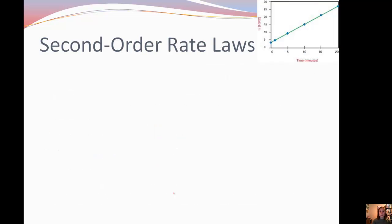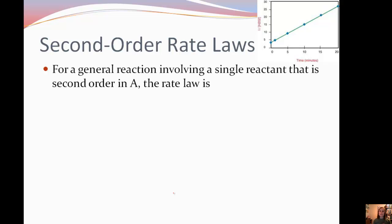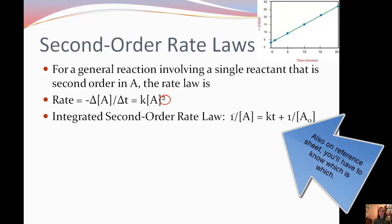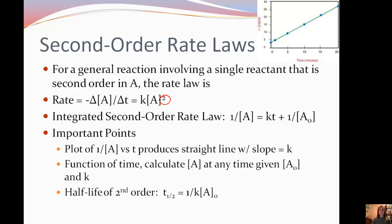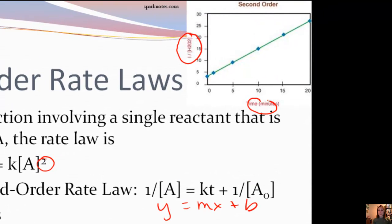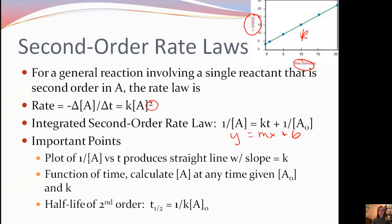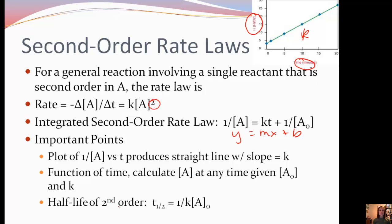Let's look at second-order rate laws. For a general reaction where the single reactant is second order, the rate law has concentration of A squared, meaning it's second order. The integrated second-order rate law is: 1/[A] = kt + 1/[A]₀. If we plot 1/[A] versus time, we get a straight line where the slope is positive k — one way to identify second-order reactions. The concentration can be calculated at any given time, and the half-life for second order is t₁/₂ = 1/(k[A]₀).